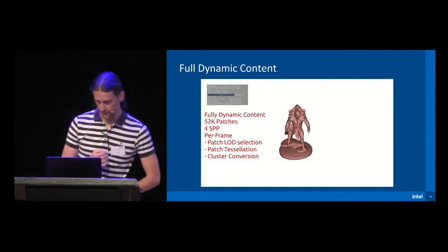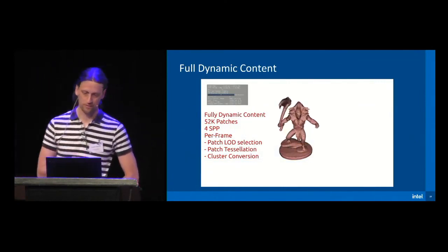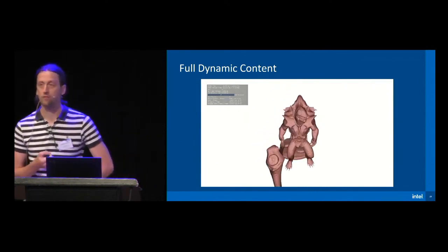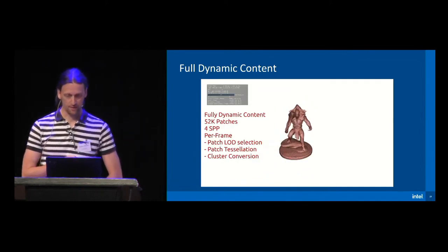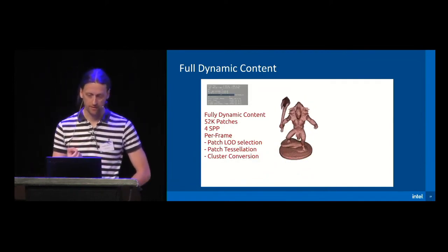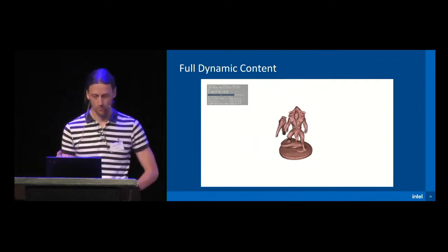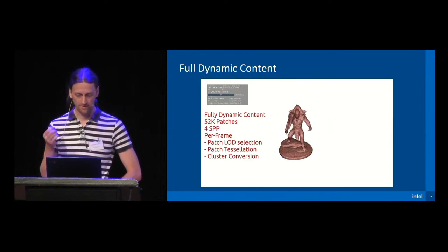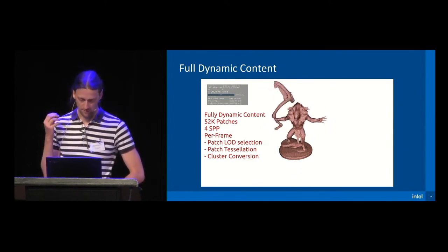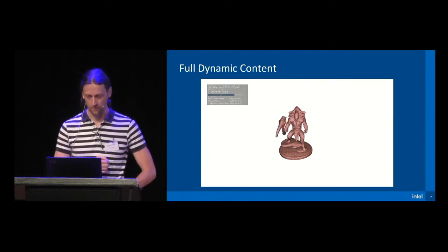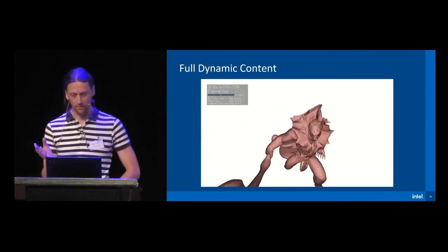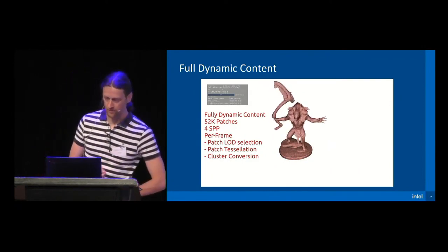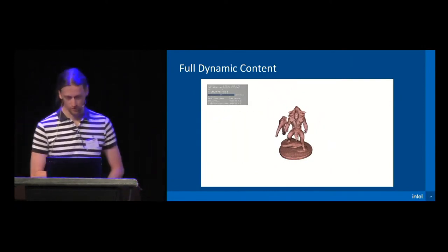We can also support fully dynamic content. Here we have 50K B-spline and Gregory patches that, for each frame, get on-the-fly tessellated based on the current LOD settings. The tessellation results are directly converted into our lossy compressed cluster format and stored to global memory. From that point on it's the same procedure: clusters get decompressed, the cluster BVHs get built and finally fused together. The BVH build process does not know anything about the cluster having been on-the-fly generated. Everything runs at roughly 60 frames per second at full HD resolution with four samples per pixel.